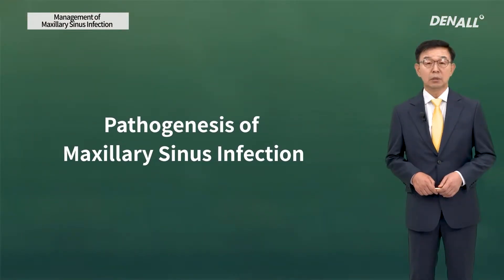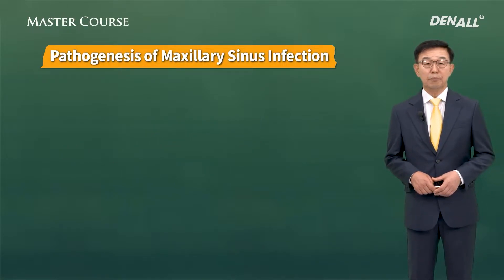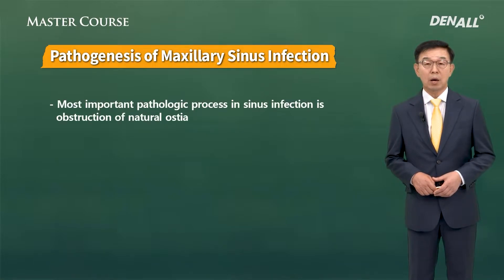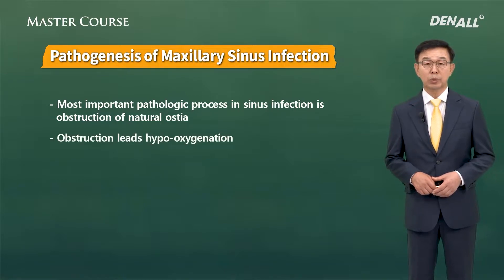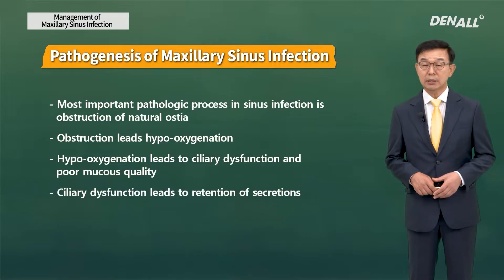Let's look at pathogenesis of maxillary sinus infection. The cause is primarily related to blockage of the maxillary ostium, which is connected to the sinus and the nose. Such obstruction can lead to hypooxygenation and this can reduce the function of the sinus. Various secretions can result, as well as infection.